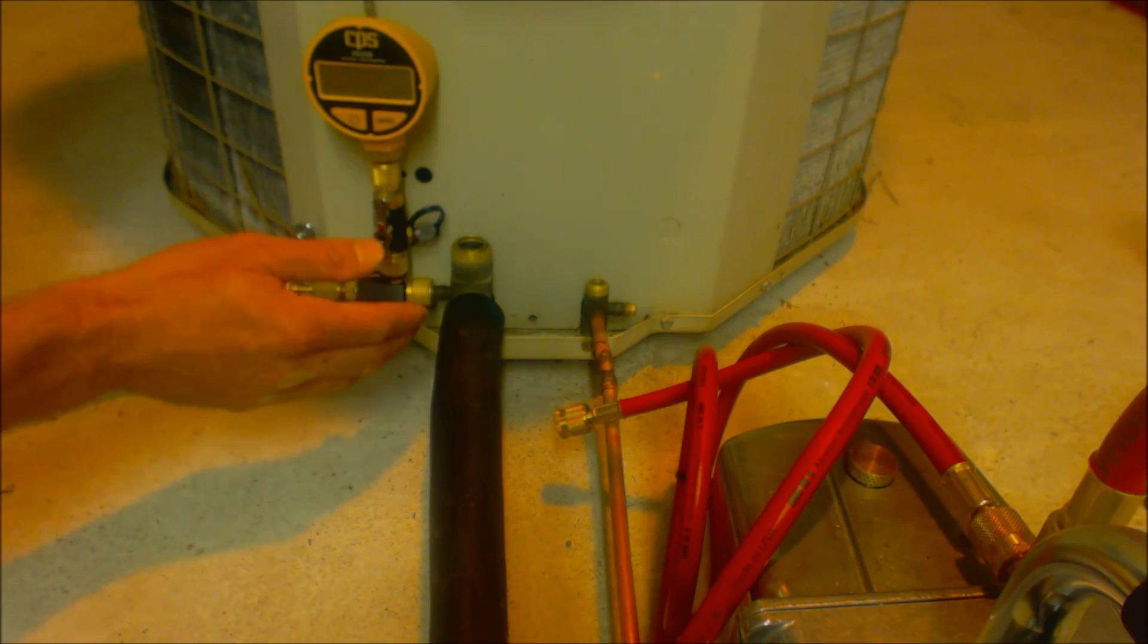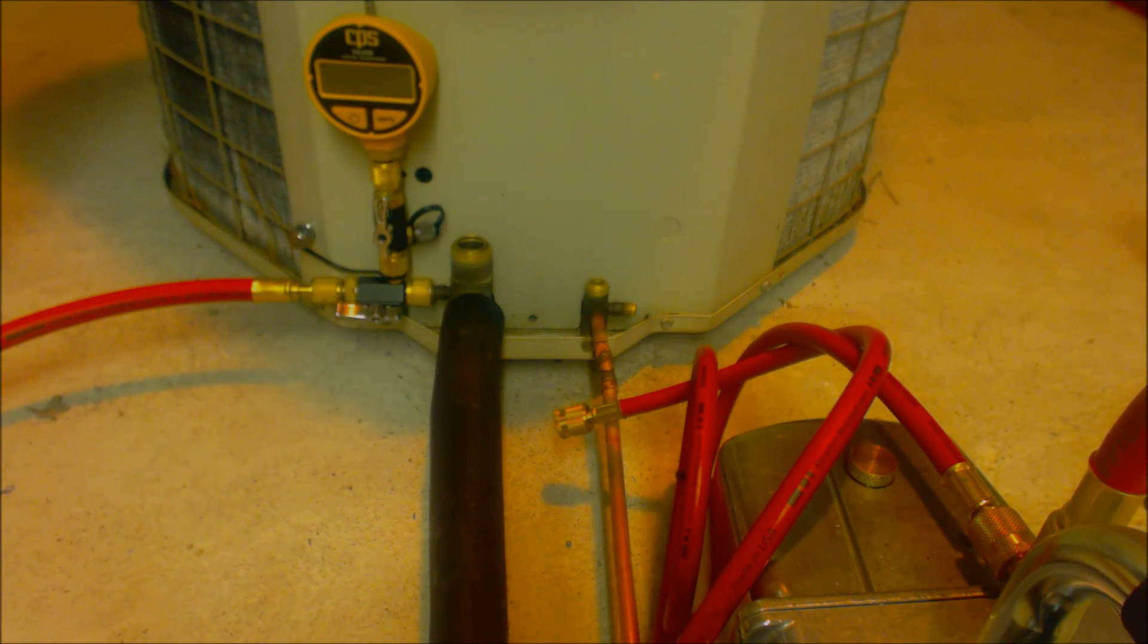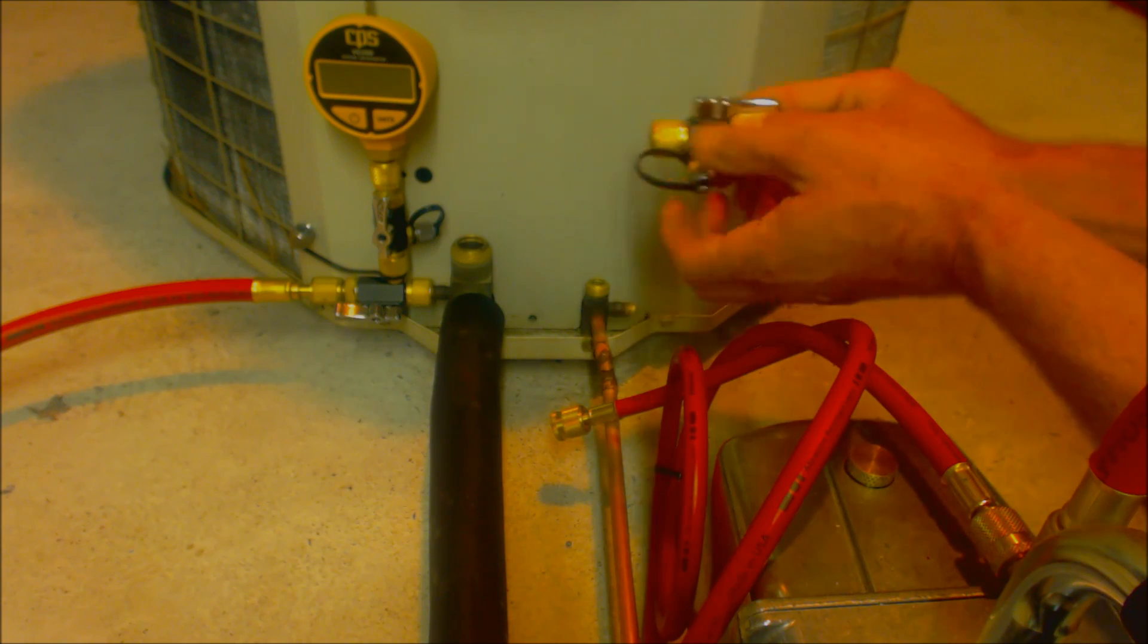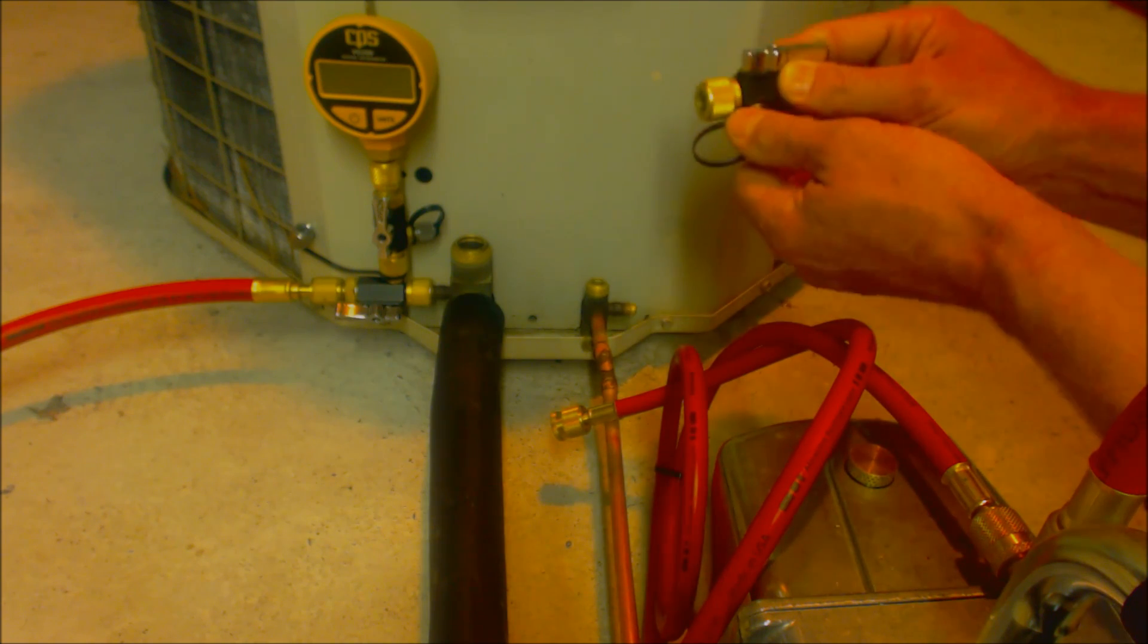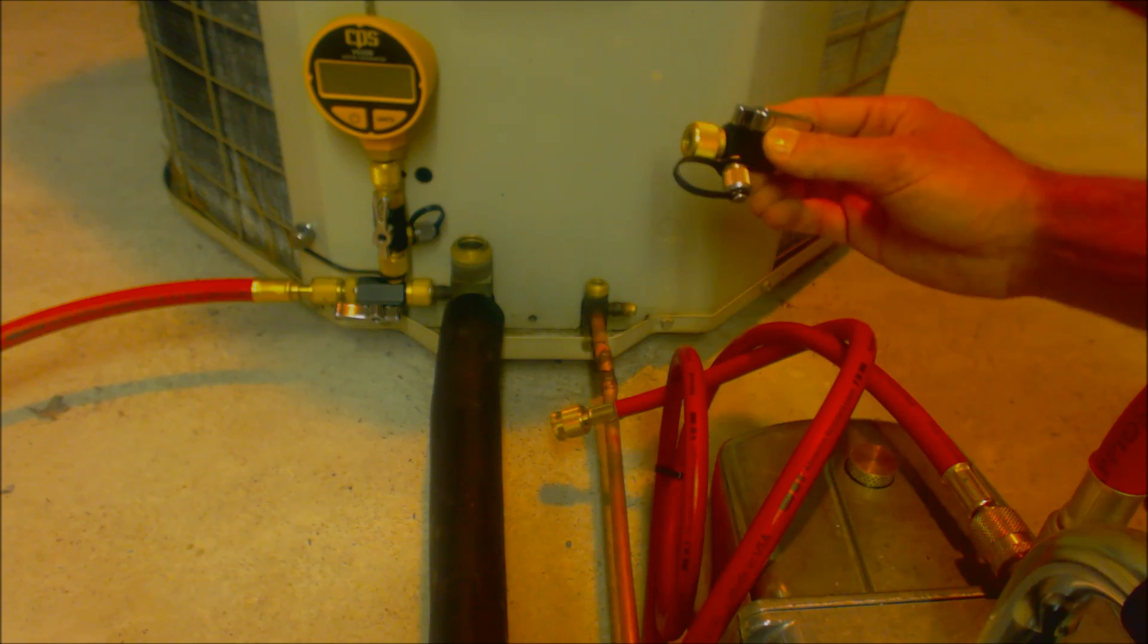You don't need to have these crazy tight, just snug, and it doesn't hurt to put just a little dab of refrigerant oil on them. Make sure that you don't get any refrigerant oil near the micron gauge because that can mess up the sensor. We'll leave this Schrader valve in. There's no need to pull that out. We're going to just make sure we have that cap tight too.